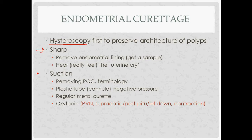A missed abortion is in utero fetal death less than 20 weeks with retention of the pregnancy — the cervix stays closed. For suction curettage, a plastic cannula hooked up to a negative pressure device removes the tissue. After suction curettage, you can go back and use the metal curette to get the endometrial lining and any remaining tissue. When doing this, use oxytocin to prevent bleeding — oxytocin from the paraventricular and supraoptic nuclei of the hypothalamus, released by the posterior pituitary, acts on oxytocin receptors causing uterine contraction.